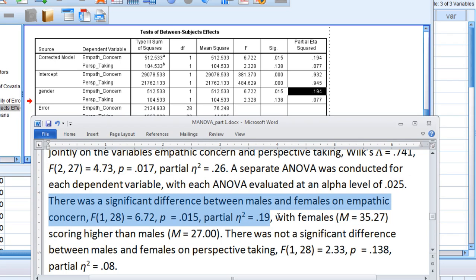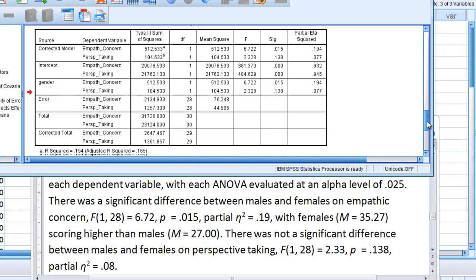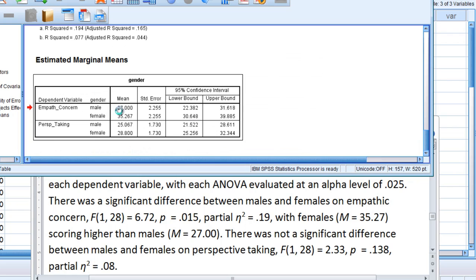And then I said with females, I gave a mean of 35.27, scoring higher than males with a mean of 27. So once again we've got that down here - here's the 35.267 for females, and then 27 for males.